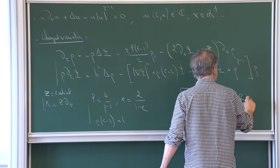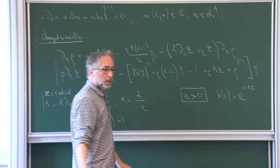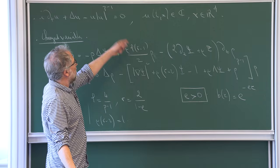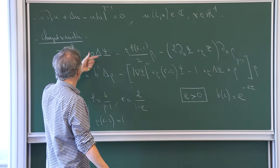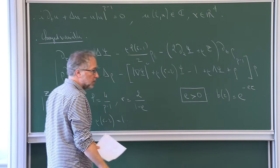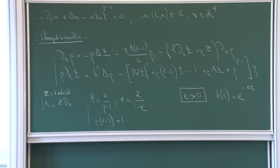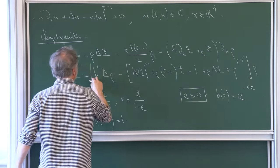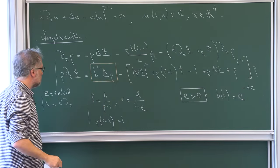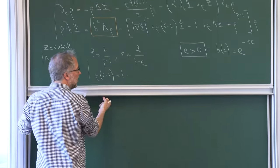I have a coupled system of two equations. The key is that there is one parameter here, this b, which I want to treat as a perturbation. Because there is exponential smallness in time, I want to treat this b as a perturbation.